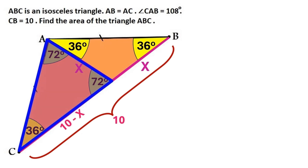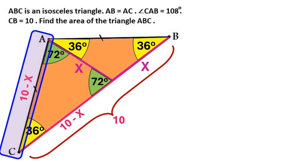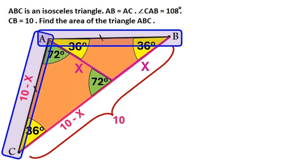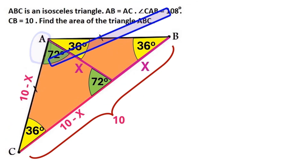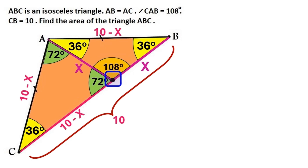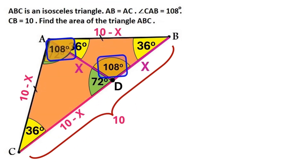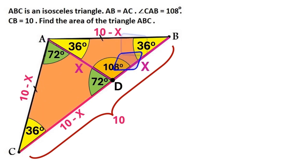Obviously this triangle is an isosceles triangle, so these two sides must be equal, and this distance AC must also be 10 minus X. We already know that AB and AC are equal, so it turns out AB is 10 minus X as well. Now these two angles must add up to 180 degrees, so this angle over here has to be 108 degrees. Let's put this point here and name it D. Triangle DBA is similar to triangle ABC, because they both have this 108 degree angle, this 36 degree angle, and this other 36 degree angle, which is a common angle.